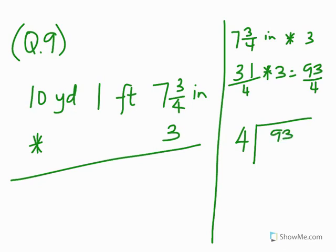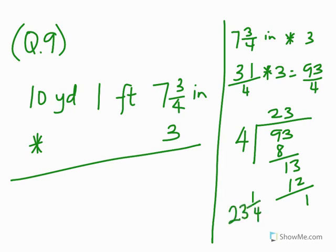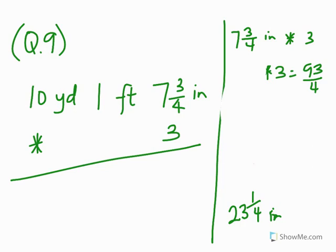93 over 4: 4 into 93 gives us 23 remainder 1. So we have 23 and 1/4 inches. Now, 12 inches make 1 foot. So how many feet can we get from 23 and 1/4 inches? We divide 23 and 1/4 by 12. 12 goes into 23 and 1/4 once, with remainder 11 and 1/4 inches. So the integer part is in feet — we got 1 foot — and the remainder 11 and 1/4 inches stays as inches.